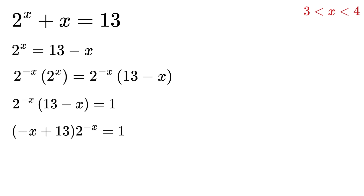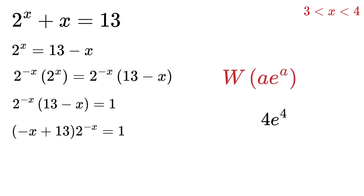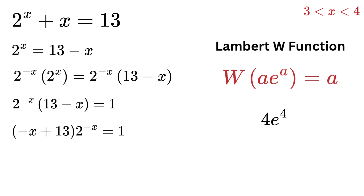Now suppose we have a function of the form a multiplied by e raised to the power a, where a can be any expression. For example, we can write 4 multiplied by e raised to the power 4. If we apply the Lambert W function on this expression, we get the result as a itself. So if we apply this W function here, the result will be 4.